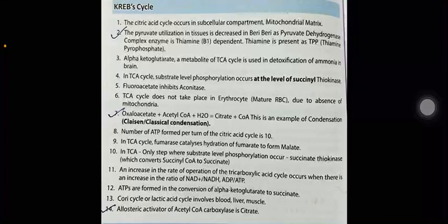Fluoroacetate inhibits aconitase. The TCA cycle does not take place in erythrocytes due to the absence of mitochondria. Oxaloacetate plus acetyl-CoA plus H₂O results in citrate plus CoA — this is an example of condensation. The number of ATPs formed per turn of the citric acid cycle is 10. Fumarase catalyzes hydration of fumarate to form malate. The only step where substrate-level phosphorylation occurs in the TCA cycle is succinate thiokinase, which converts succinyl-CoA to succinate.